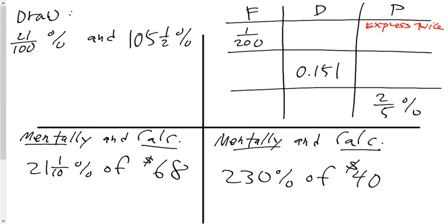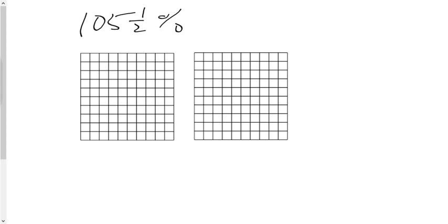Our second question asks us to do 105 and a half percent. So 105 and a half percent. Again, if I start with my hundreds grid. So here is my hundreds grid. Now why did I do two? There's more than 100 percent.